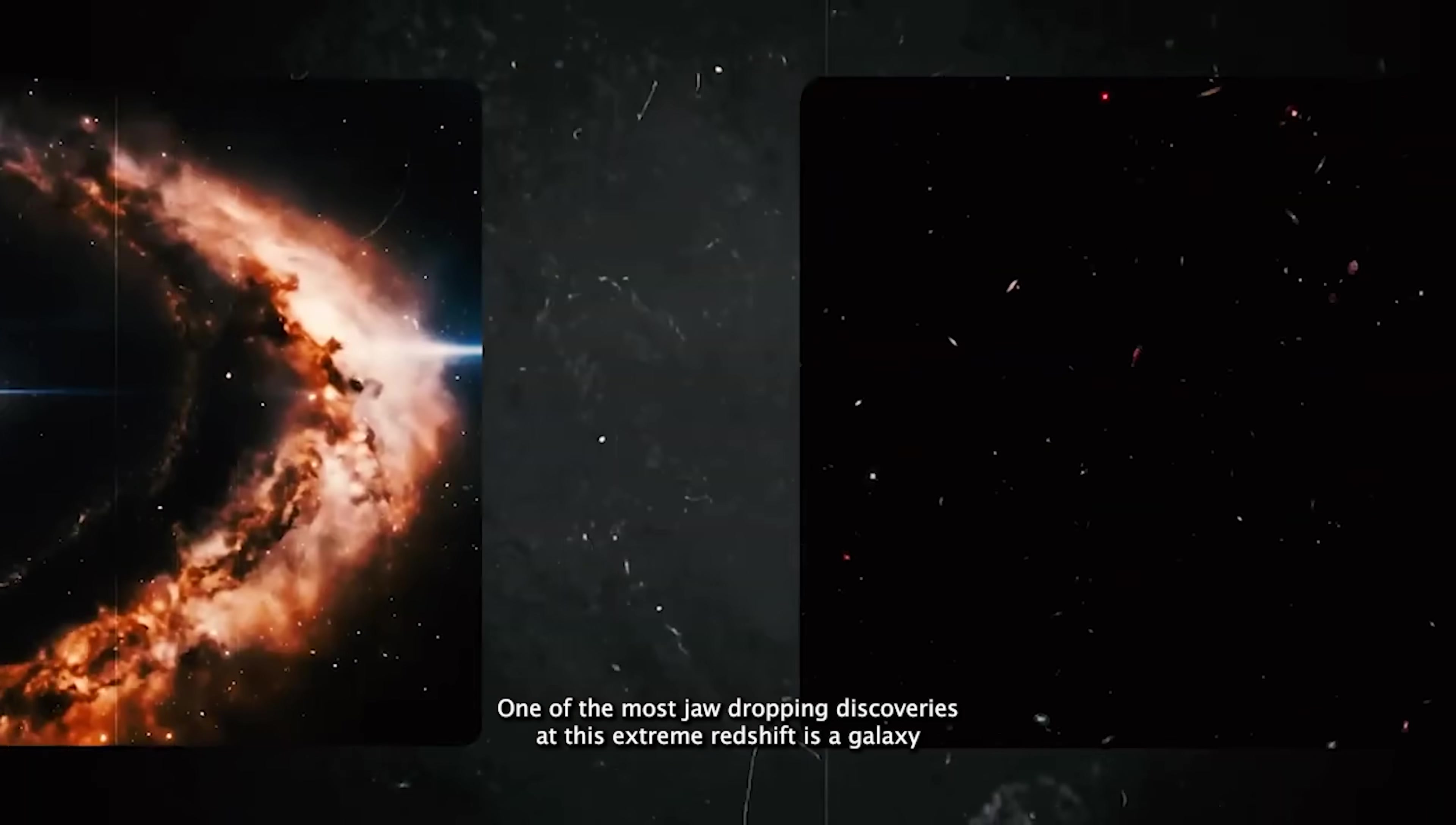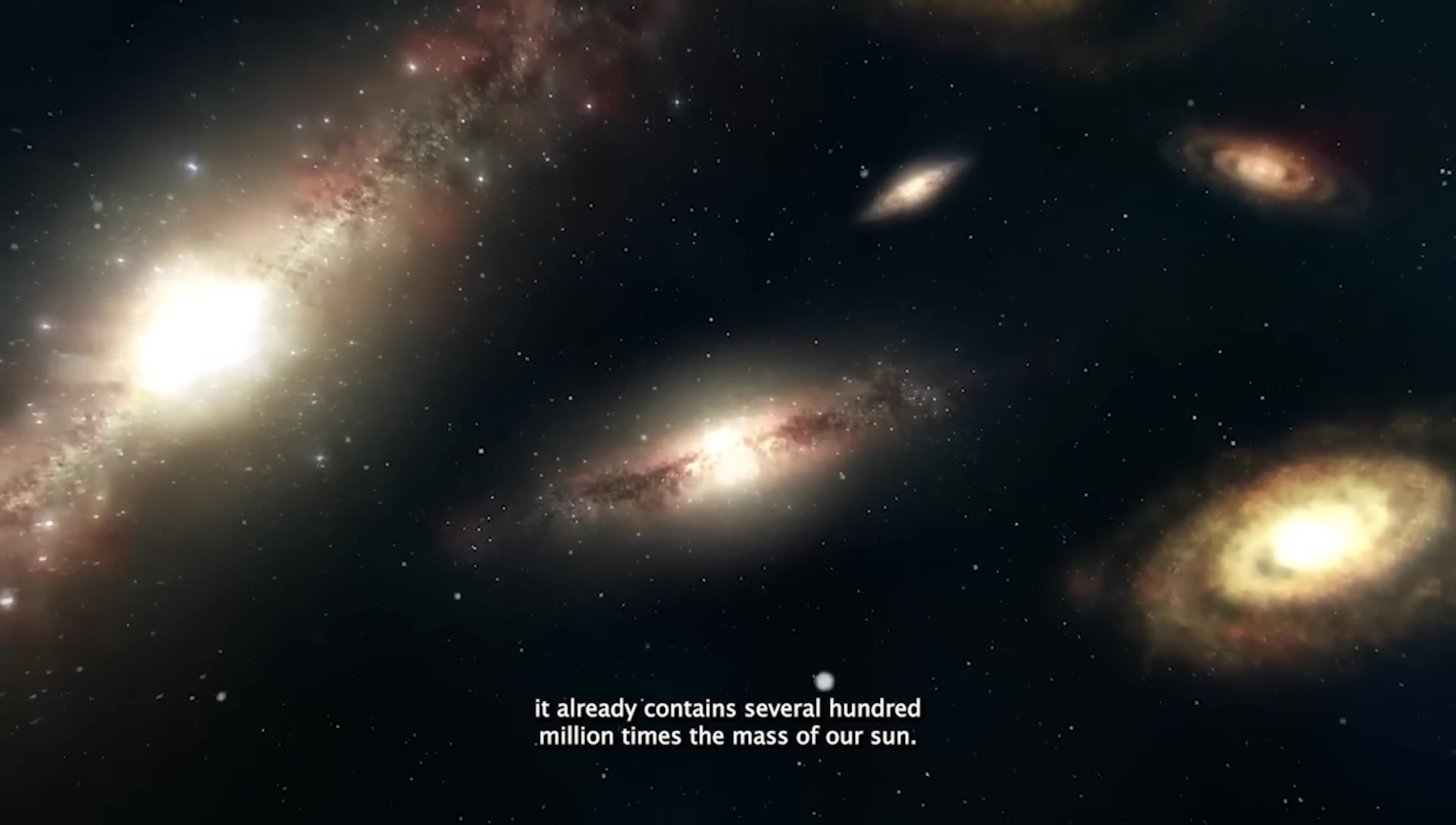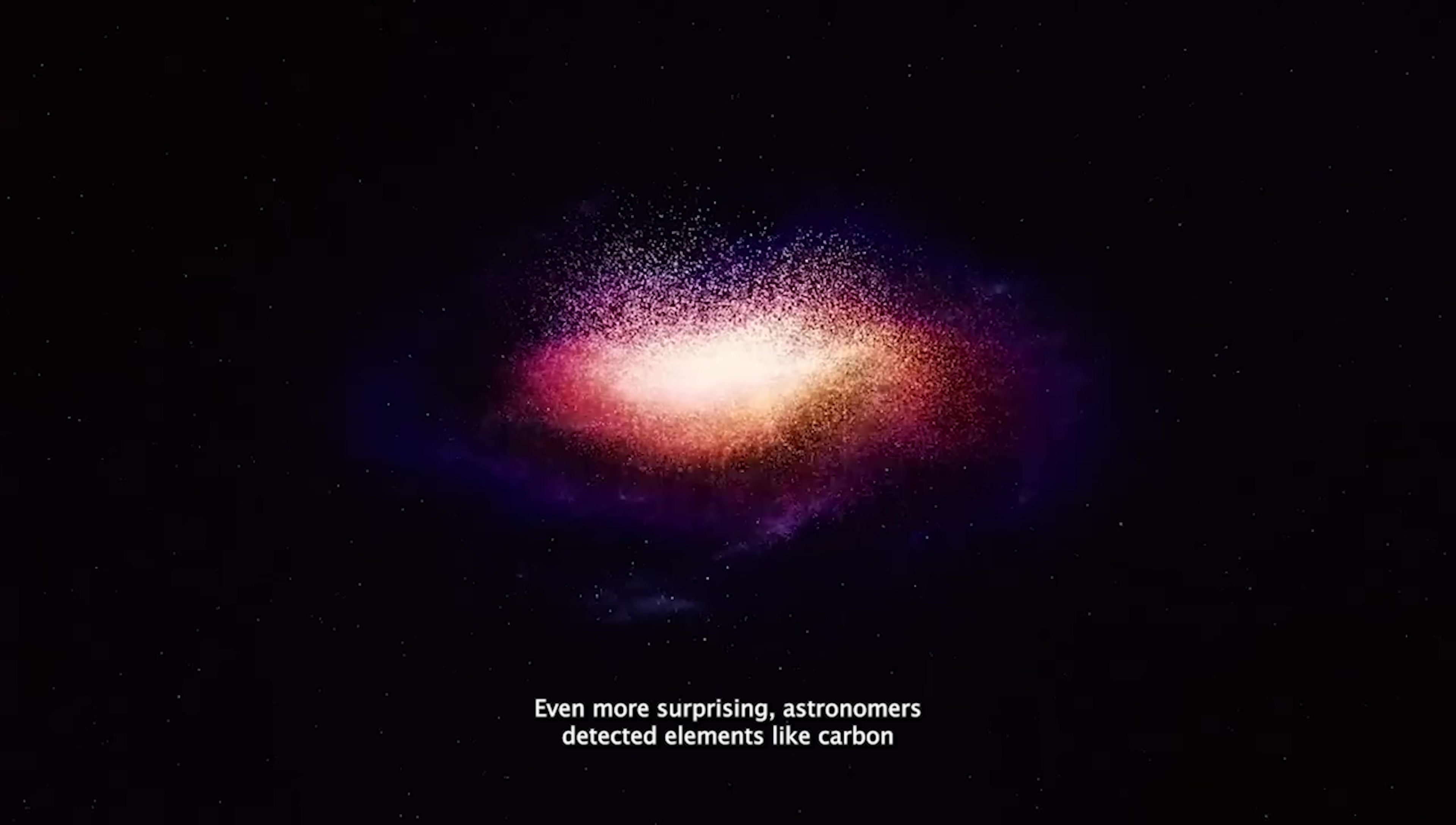One of the most jaw-dropping discoveries at this extreme redshift is a galaxy named Jade's GSZ-14. Despite existing just 280 million years after the Big Bang, it already contains several hundred million times the mass of our Sun. This leaves scientists stunned. How could the universe create such a massive, bright structure so quickly?